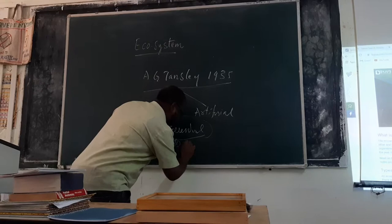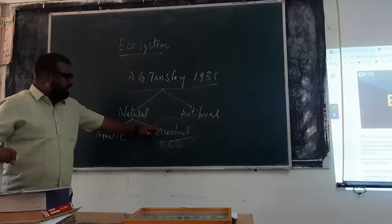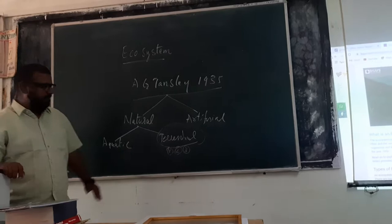One is called as forest ecosystem, second one is called as grassland ecosystem, and third one is called as desert ecosystem. These are the major three types — forest, desert, and grassland ecosystem — coming towards the terrestrial ecosystem. These are the major important types for the land ecosystem.